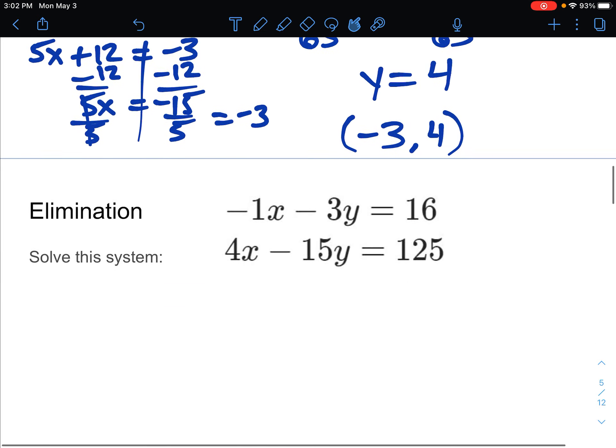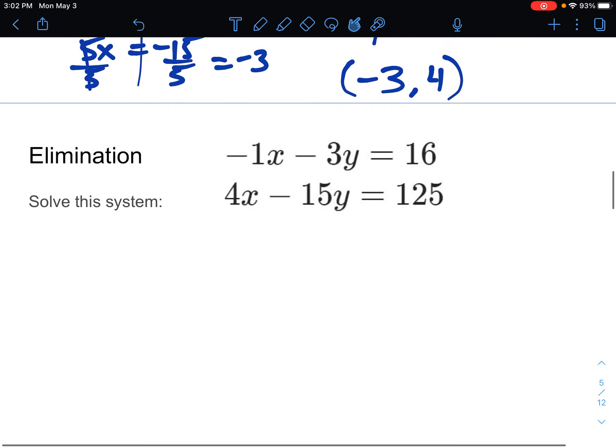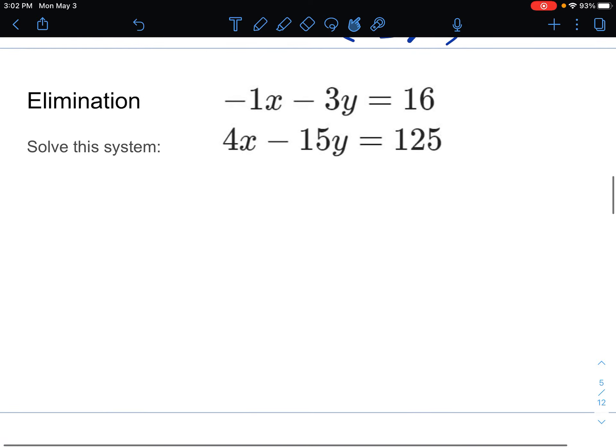A couple more examples here. For the next one, again, we've got options. We can make opposites with the x's or with the y's. I'm going to do it a little bit different this time. I'm going to do the y's just to show you can. Even though the negative 1x would make it a pretty easy negative 4x by doing just times 4. I'm going to do the y's instead, just to show that it's possible.